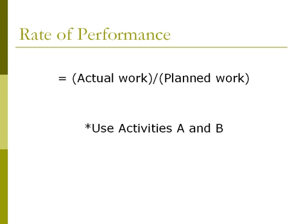To calculate the rate of performance, we will divide the actual work by the planned work. Since only activities A, B, and C have been completed so far, we will only use these activities for the calculation. However, activity C is not part of the critical path, so we will only use activities A and B for the calculation.